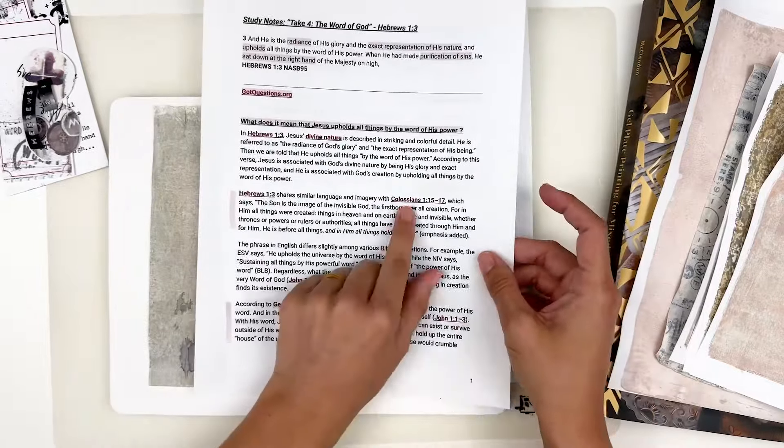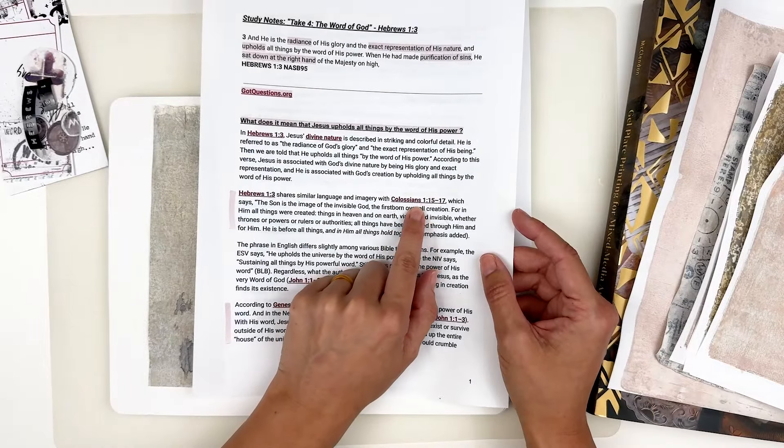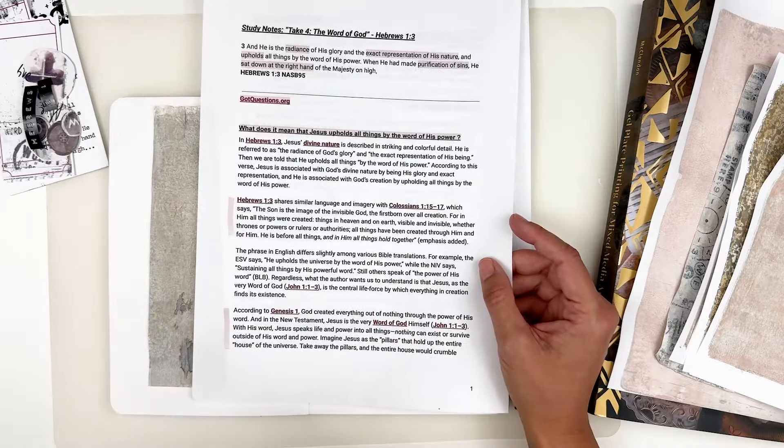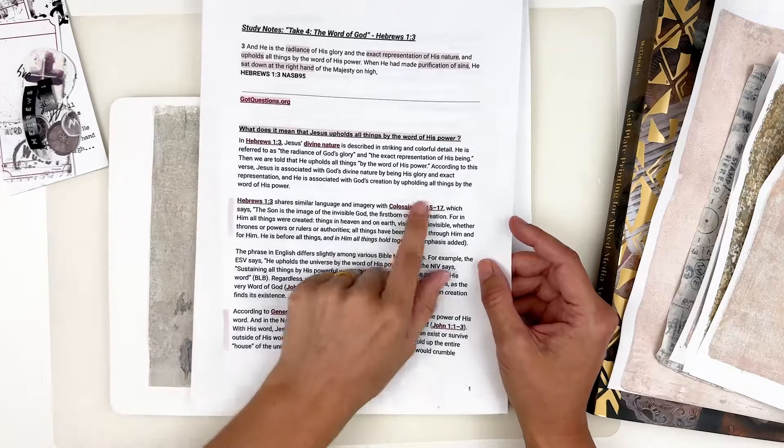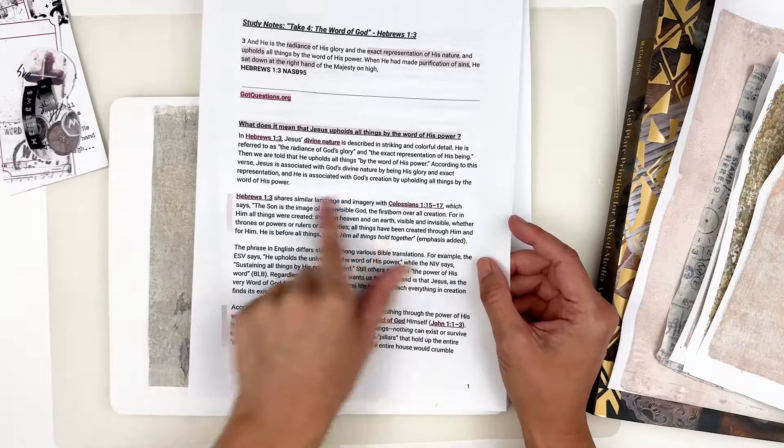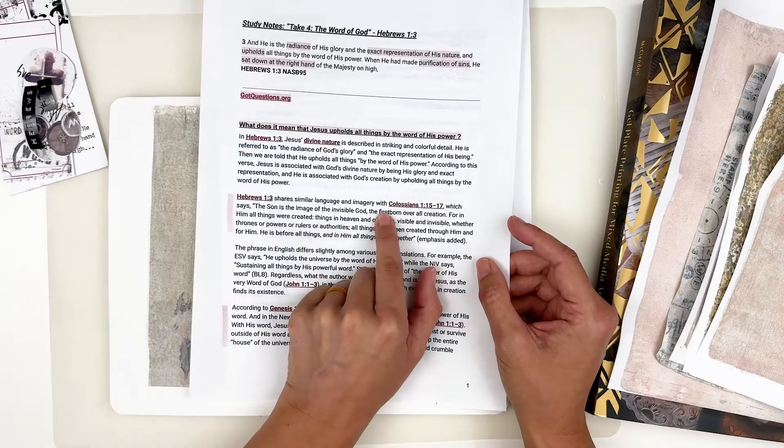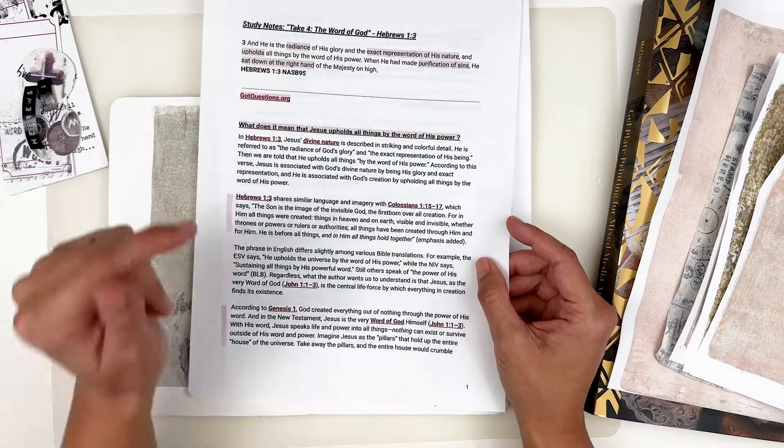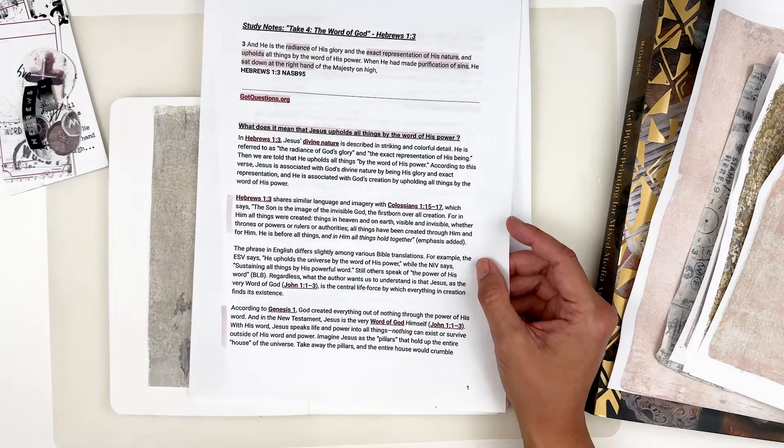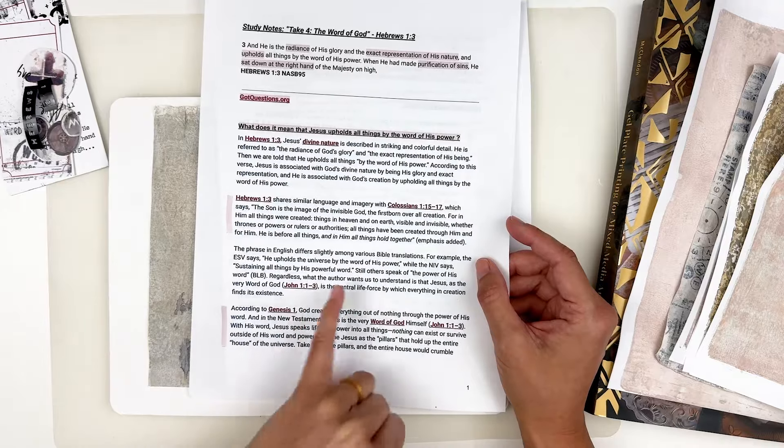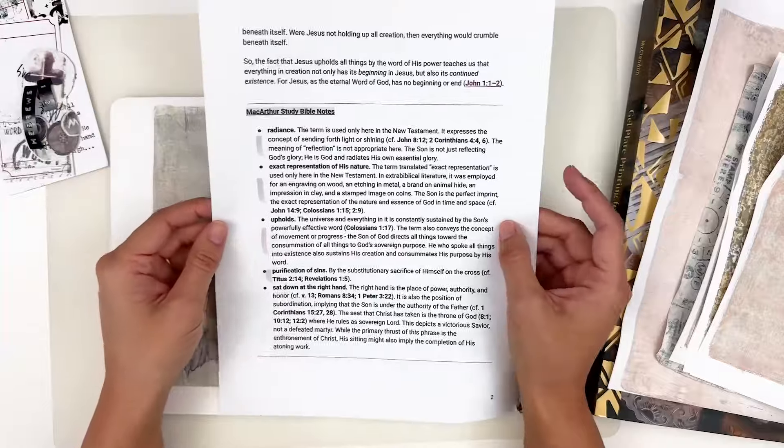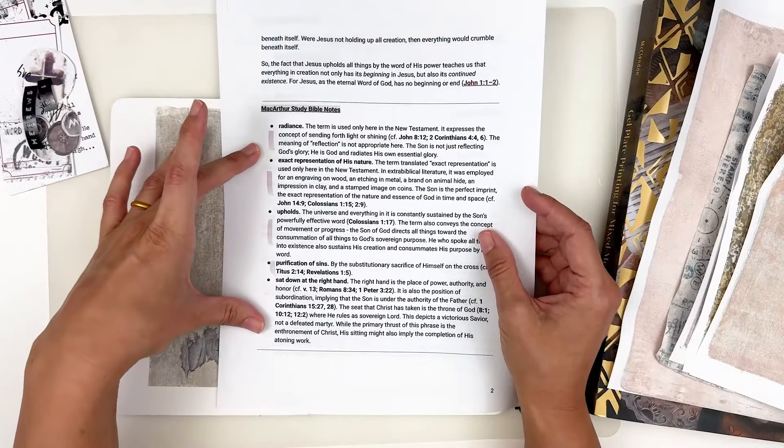According to Genesis one, God created everything out of nothing through the power of his word. And in the new Testament, Jesus is the very word of God himself. John one, one through three, with his word, Jesus speaks life and power into all things. Nothing can exist or survive outside of his word and power. Imagine Jesus as the pillars that hold up the entire house of the universe, take away the pillars and the entire house would crumble beneath itself. Where Jesus, not holding up all creation, then everything would crumble beneath itself. So one note I do want to make is anywhere where you see this bold purple font, those are hyperlinks.